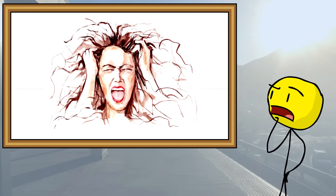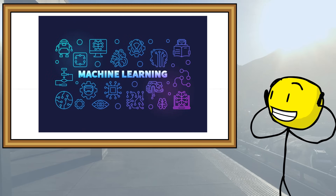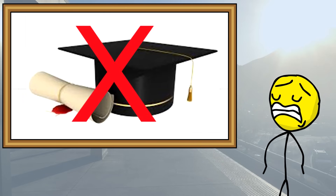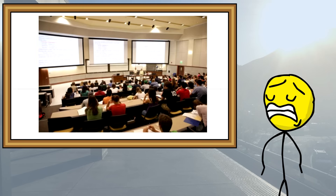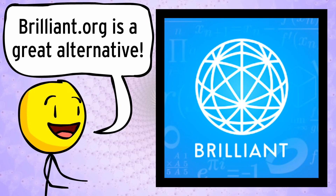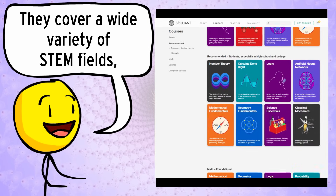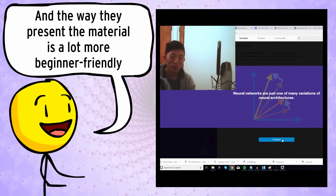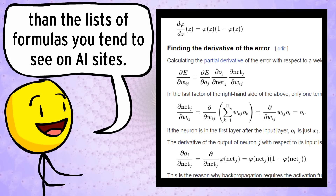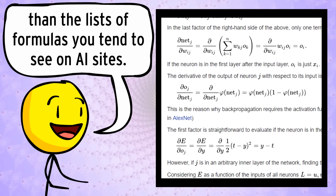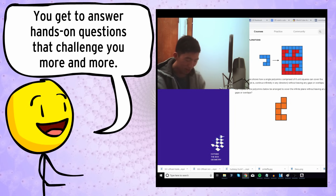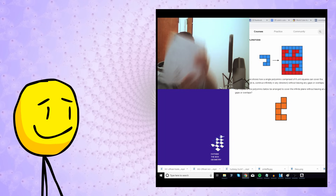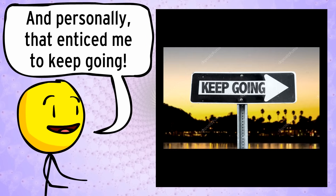Making machine learning projects like this is fun. Speaking from experience though, it's hard to get started, especially when you don't have the option of taking a college course about machine learning. Brilliant.org is a great alternative — they cover a wide variety of STEM fields including AI, and the way they present the material is a lot more beginner-friendly than lists of formulas. You get to answer hands-on questions that gradually challenge you more and more, and personally, that enticed me to keep going.